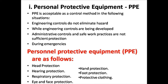The first safety measure is PPE — personal protective equipment. Types include: head protection (e.g., helmet), hearing protection, respiratory protection, eye and face protection (e.g., mask), hand protection (e.g., gloves), foot protection (e.g., boots), and protective clothing.